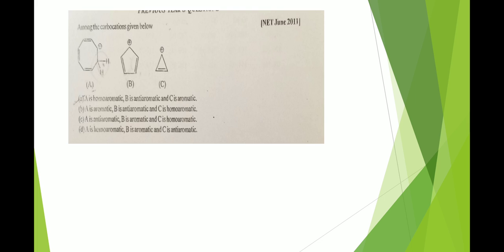This is a previous year question from NET June 2011. The first structure contains six pi electrons, one cation, and one sp3 hybridized carbon atom — so it is homo-aromatic. The second contains four pi electrons — it is anti-aromatic. The third contains a double bond giving two pi electrons — it is aromatic. Therefore option A is correct.